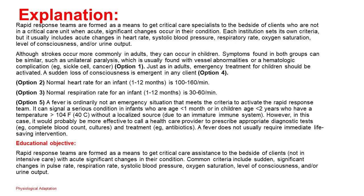Option 2: Normal heart rate for an infant (1 to 12 months) is 100 to 160 per minute, so 120 per minute is within normal range. Option 3: Normal respiration rate for an infant (1 to 12 months) is 30 to 60 per minute, so 38 per minute is normal. Option 5: A fever is ordinarily not an emergency situation that meets the criteria to activate the rapid response team. It can signal a serious condition in infants less than one month old or in children less than two years with a temperature greater than 104°F (40°C) without a localized source. A fever does not usually require immediate life-saving intervention.